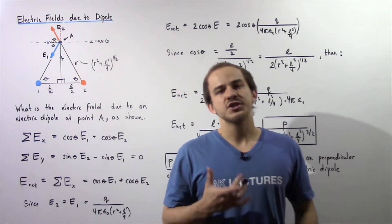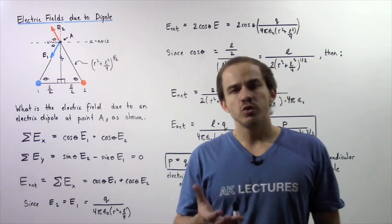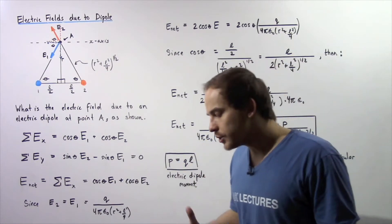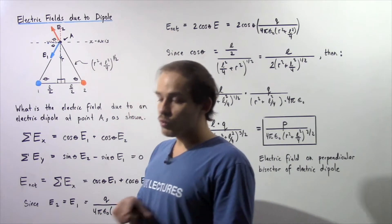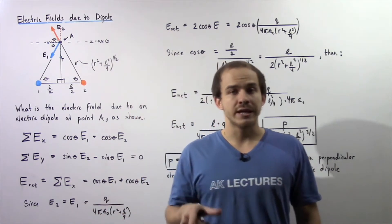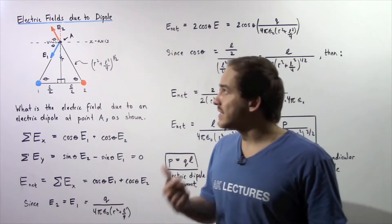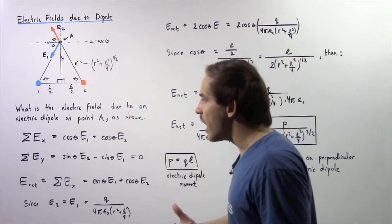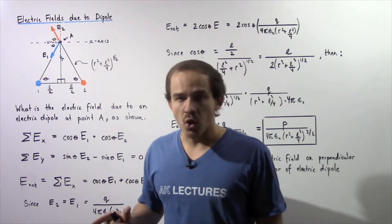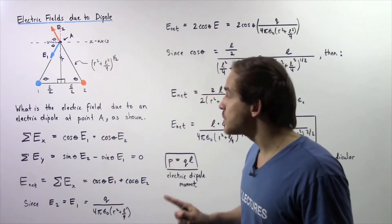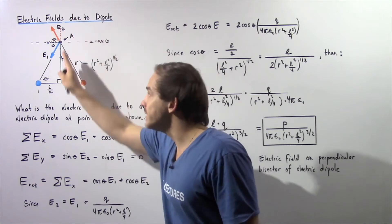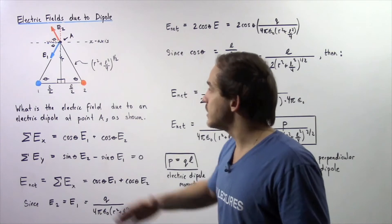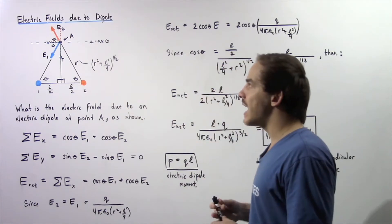In the past several lectures, we explored what happened to an electric dipole placed into an external electric field. Now let's suppose we don't have an external electric field, and we want to calculate what the electric field is produced as a result of an electric dipole. Let's only look at the points that lie on the perpendicular bisector that bisects our electric dipole, as shown in the following diagram.